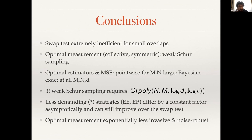We therefore analyze less demanding strategies — less demanding because they require measuring a smaller number of copies collectively, especially in the estimate-and-project case. Implementing the covariant measurement is not simple, but the hope is that if you can get some estimate of the state direction, this will already improve over the swap test. We also showed advantages with respect to the swap test in terms of measurement invasiveness, and showed a correction in the case of added noise — as could happen in quantum machine learning applications.